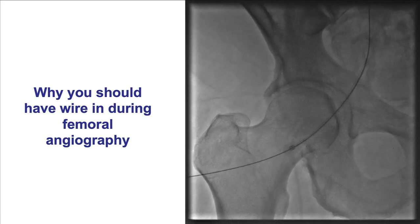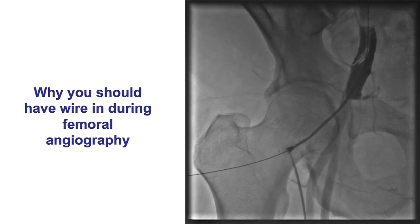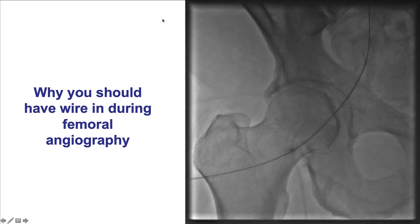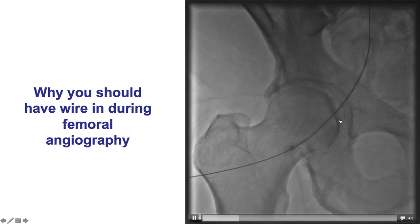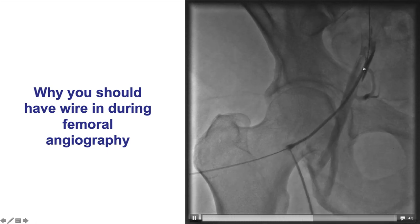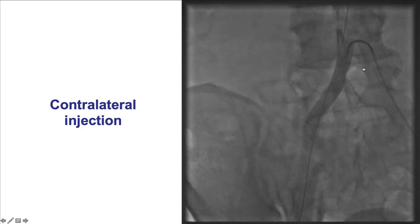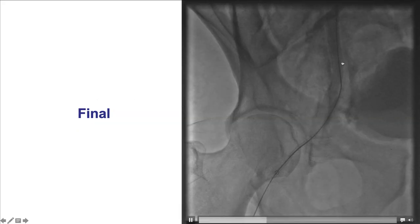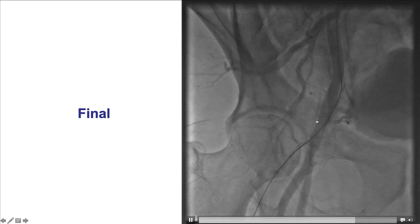One way to detect complications and improve the safety of femoral access is to perform a femoral angiogram immediately after obtaining femoral access. When this is done, a 0.035 wire should be left inside the sheath just in case there is a problem. In this case, there was actually dissection occurring during injection. A contralateral injection was performed that showed good antegrade flow, likely because this was a retrograde dissection sealed by the antegrade blood flow, and in the end there was a nice result without any significant residual complications.